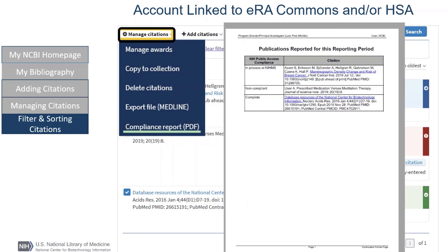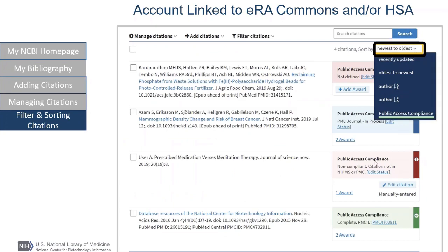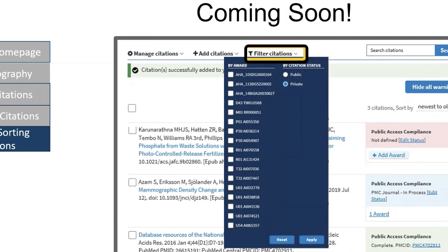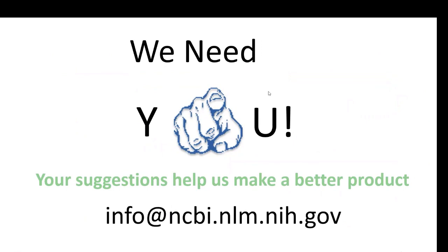One of the last features I want to show you today is the ability to sort all of your records by public access, which is also found in the sorting field. If you have any remaining questions, please type them in the chat box because this concludes our tour of My Bibliography. But I have one last thing to show you — coming soon is more advanced filtering, available probably in about two weeks or so. Grant holders will be able to filter by multiple grants, and everyone will be able to filter citations by citation type, public and private. This is my final request: we need your help to make our product better. Please write us with features you and others could benefit from. Thank you for joining me, and on behalf of NCBI User Services, we look forward to hearing from you.